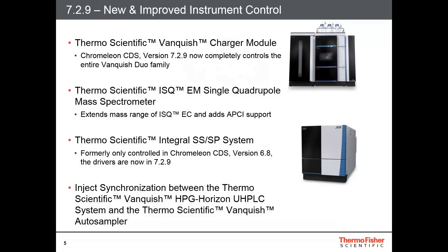Starting with new and improved instrument control available in 7.2.9: this release completes control for the entire Thermo Scientific Vanquish line with the addition of the charger module. The Thermo Scientific ISQ-EM single quadrupole mass spectrometer has also been added, extending the mass range of the ISQ-EC and adding APCI support. The Thermo Scientific Integral SS-SP system has been added — formerly only controlled in Chromeleon CDS version 6.8, but the drivers are now in 7.2.9. Also, inject synchronization between the Thermo Scientific Vanquish HPG Horizon UHPLC system and the Thermo Scientific Vanquish auto sampler has been added.